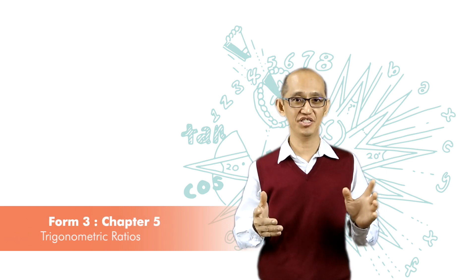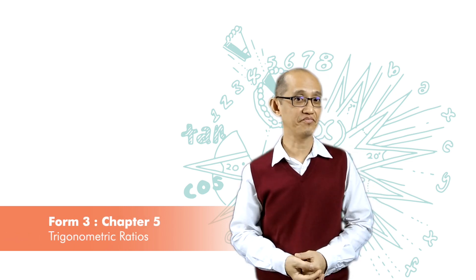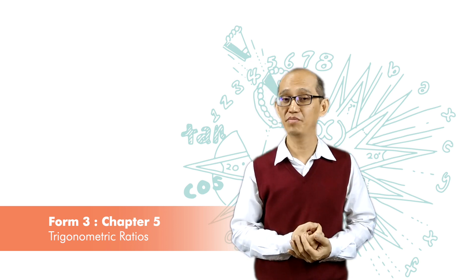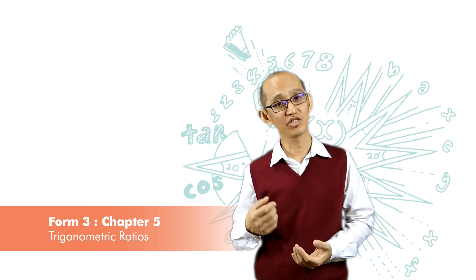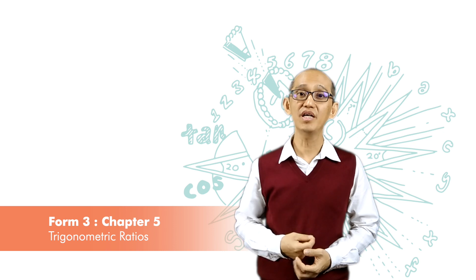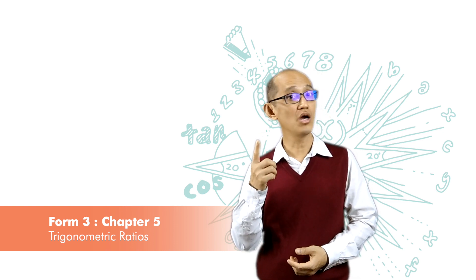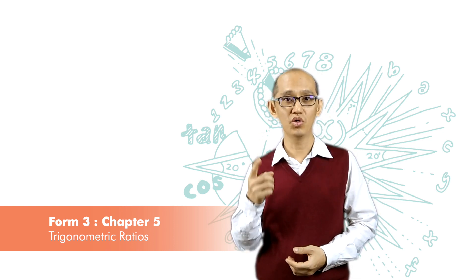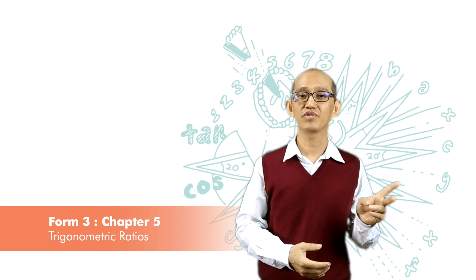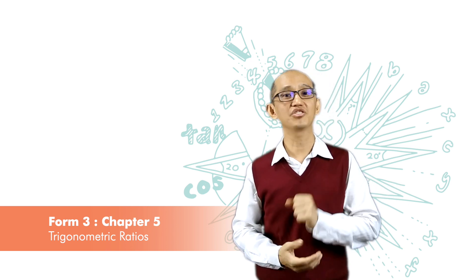Although we have tangent, sine, and cosine, and we have learned the relationship between tangent, sine, and cosine, actually if we are given one of the trigonometry ratios, we are able to find out the other two ratios using Pythagoras theorem.